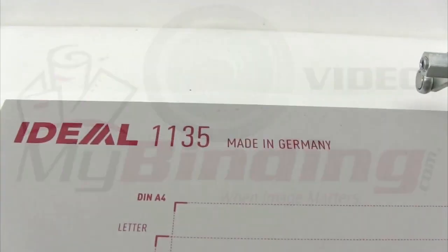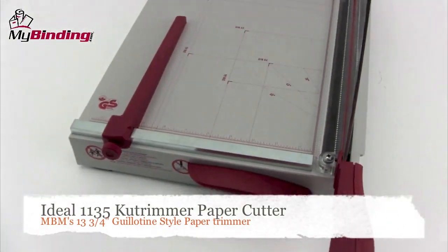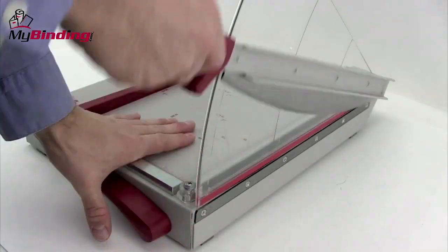Welcome to MyBinding video. Let's take a look at the Ideal Cut Trimmer 1135, MBM's 13 ¾ inch guillotine style paper trimmer.